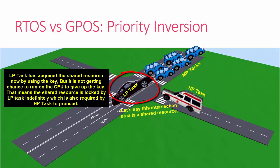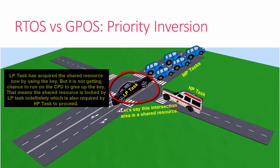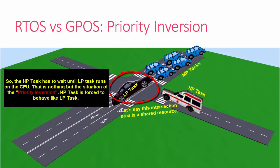...this shared resource, and the higher priority task cannot access it. So the higher priority task has to wait until the lower priority task releases the key, causing the inversion in priority. In GPOS, this is not at all a major issue.